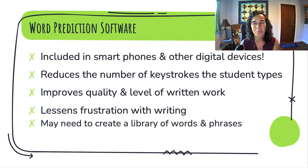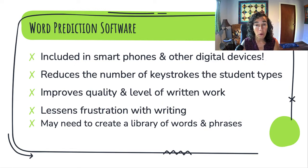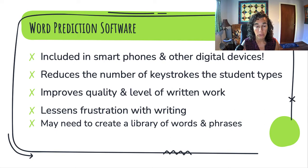Next up: word prediction software. Word prediction is included in smartphones and other digital devices — we call it auto-correct. It reduces the number of keystrokes that the student types, improves the quality and level of written work, and may lessen frustration with writing. Depending on the device, we may need to create a library of words and phrases appropriate to the task.